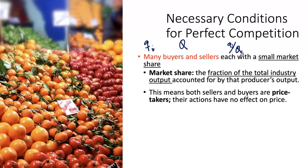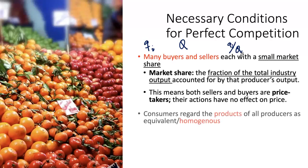When you have a small market share as a producer, you have no ability to set the price — you are a price taker. Whatever the market determines as a price, you will produce and sell at that price. Likewise, with many buyers, buyers individually have no effect on the price. So both buyers and sellers are price takers; they cannot individually have any effect on what the market price is going to be.